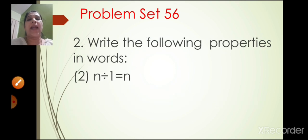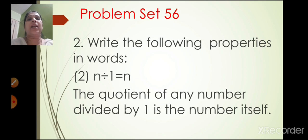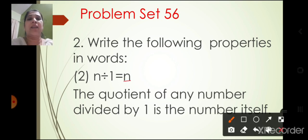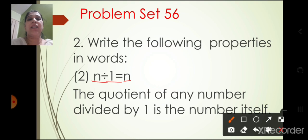The second one: N divided by 1 is equal to N. You will write: the quotient of any number divided by 1 is the number itself. The number is taken as N. For example, 9 divided by 1 is equal to 9. So this N is your quotient — any number divided by 1 gives the number itself.